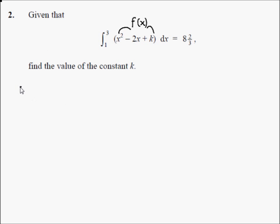Now integral upper limit 3 and lower limit 1 of f of x, that's x to the n plus 1 over n plus 1. So we have 1 over 3 times x cubed minus 2x becomes 1 over 2 times 2x squared, that's half of 2x squared, plus kx, evaluated from 1 to 3.